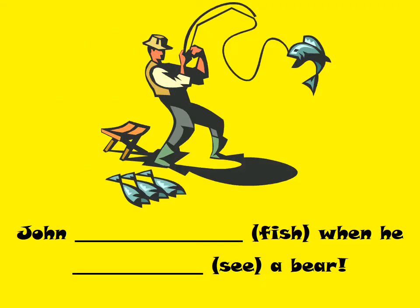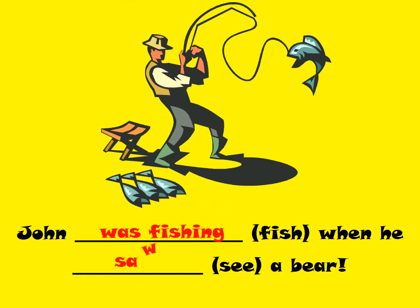John was fishing when he saw a bear. So what is the interrupted action? The bear interrupted him — that's the interrupted action.